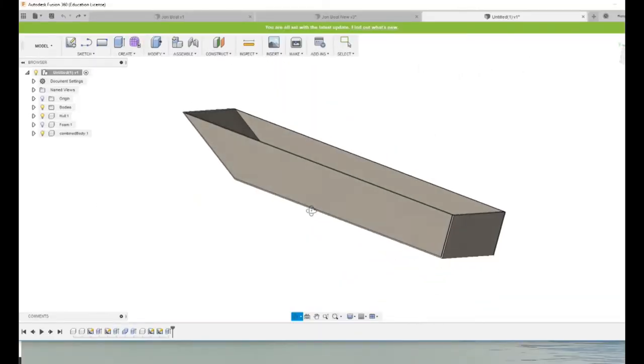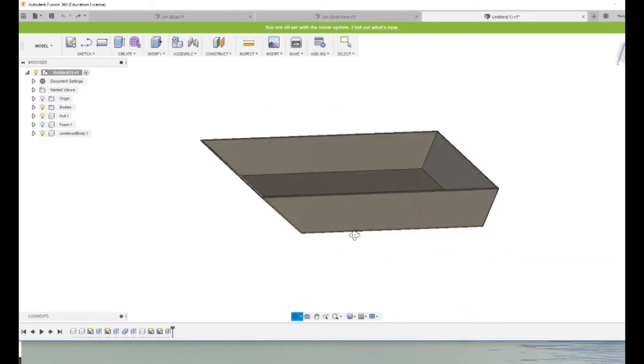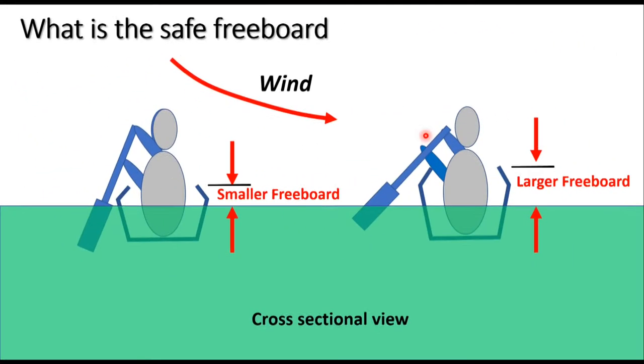Some CAD software, such as Fusion 360, has tools to help determine the volume of an irregular shape. Next question is, what is the right value of the freeboard?